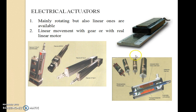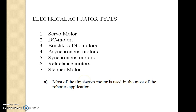These are the different types of electrical actuators — mainly rotating but also linear actuators are available. These are rotating actuators and these are linear actuators, with linear movement using gears or a linear motor. The electrical actuator types include servo motor, DC motor, brushless DC motor, asynchronous motor, synchronous motor, reluctance motor, and stepper motor. Most of the time, servo motors are used in robotics applications for motion control.